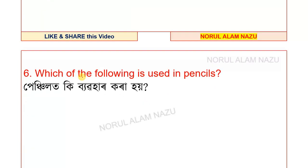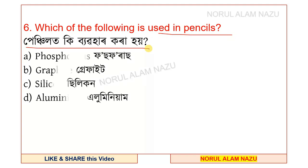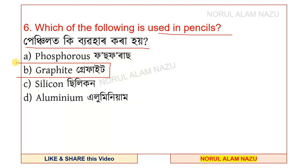Next question: which of the following is used in pencils? Option b — graphite — is the answer. Graphite is used in pencils.